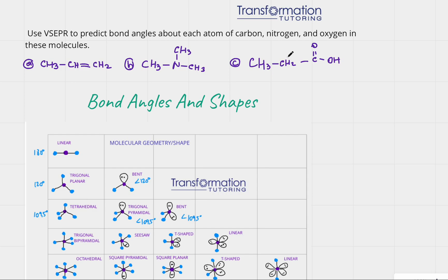We need to fill in lone pairs because carbon, nitrogen, and oxygen each want to have an octet — eight electrons. If they don't appear to have eight electrons, that means lone pairs were not shown. For example, this nitrogen has only six electrons but needs eight, so it must have a lone pair. This oxygen has four electrons and needs eight, so we add lone pairs. This other oxygen has two electrons, plus a bond, giving it eight as well.